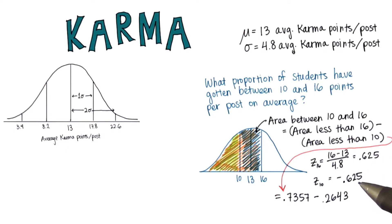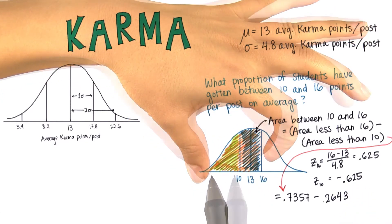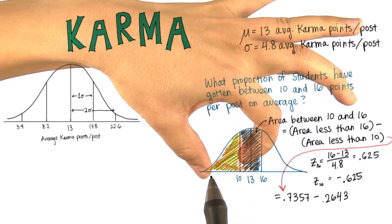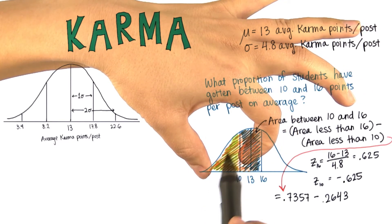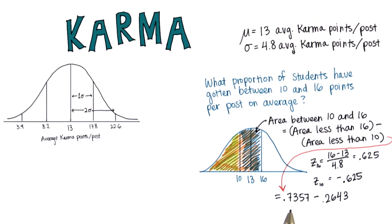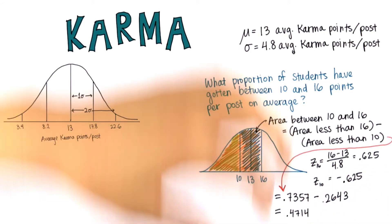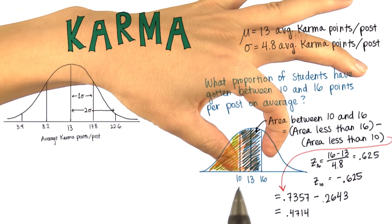Notice that since these are the same values — one positive and one negative — the area less than 0.625 plus the area less than negative 0.625 adds to one. That's because the area on each side is equal, which is a property of the symmetry of the normal distribution. So if you add 0.7357 and 0.2643, you get one. Subtracting them gives us 0.4714, which is the area in between 10 and 16.